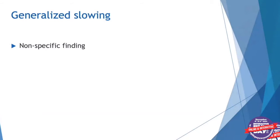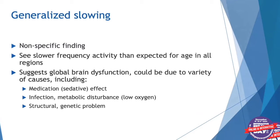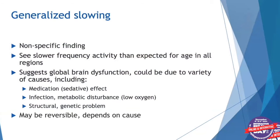Now, an example of a finding sometimes seen known as generalized slowing. This is a very nonspecific finding, but we see it relatively commonly. In general, we see slower frequency activity than expected for age in all regions of the brain. This suggests global brain dysfunction, and it could be due to a variety of causes including medications — particularly sedative medication effects — infection, a metabolic disturbance such as low oxygen, or structural or genetic problems. Because it's nonspecific and doesn't point to a specific cause, it can't tell you about severity or prognosis. It may be reversible depending on the cause.